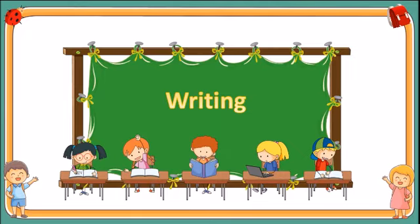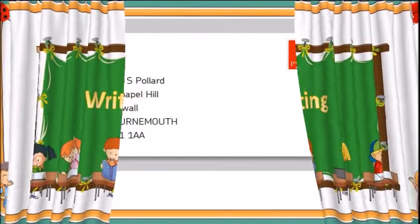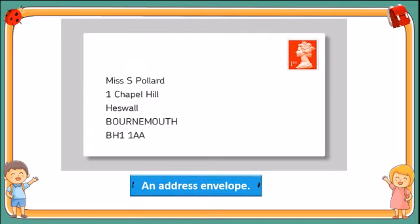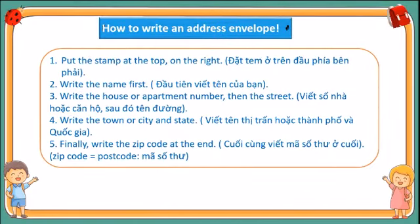Let's move on to writing. Look at the picture — it's an address envelope. Today I'm going to help you write an address envelope. There are 5 steps: Step 1 — put the stamp at the top on the right. Step 2 — write the name first. Step 3 — write the house or apartment number, then the street. Step 4 — write the town or city and state. Step 5 — write the zip code at the end.